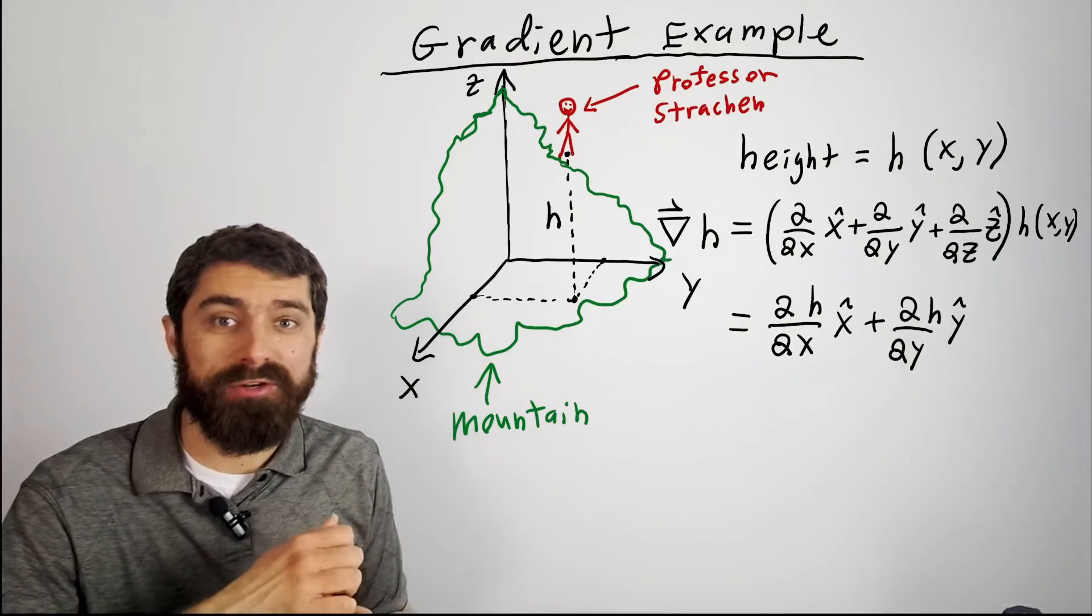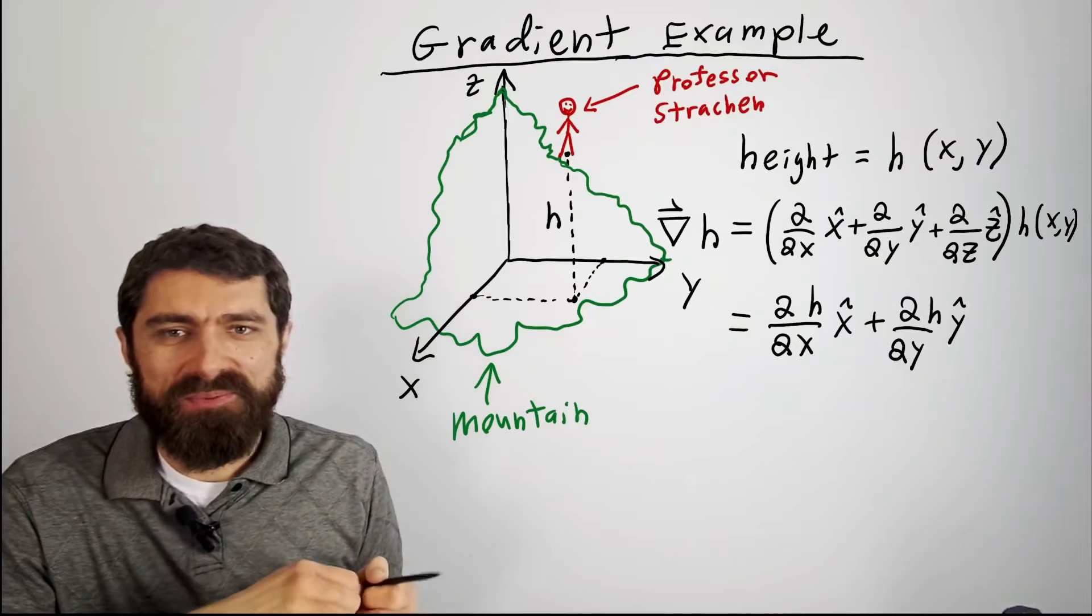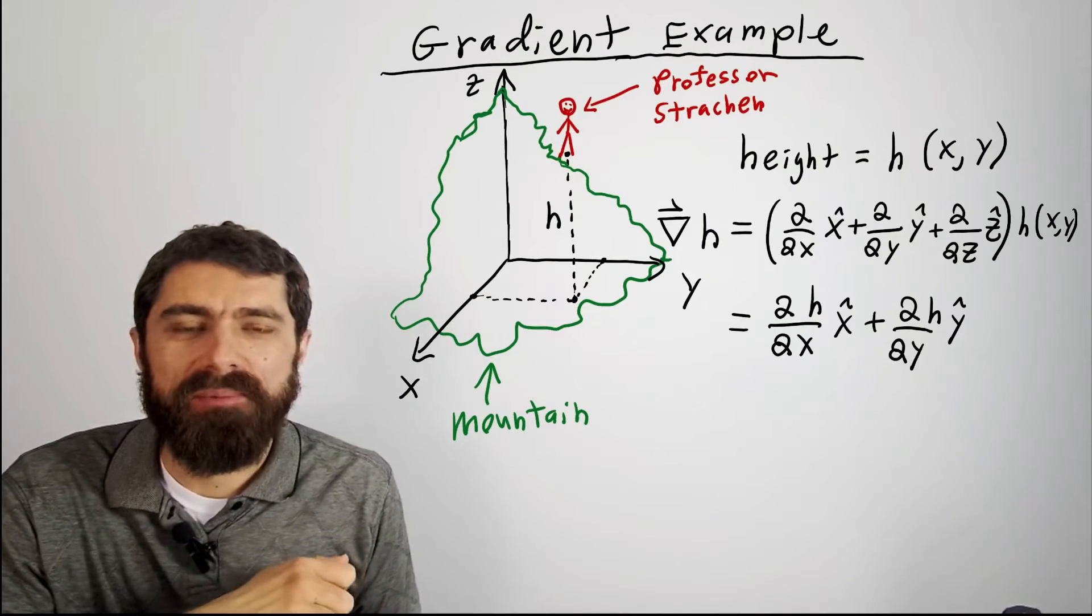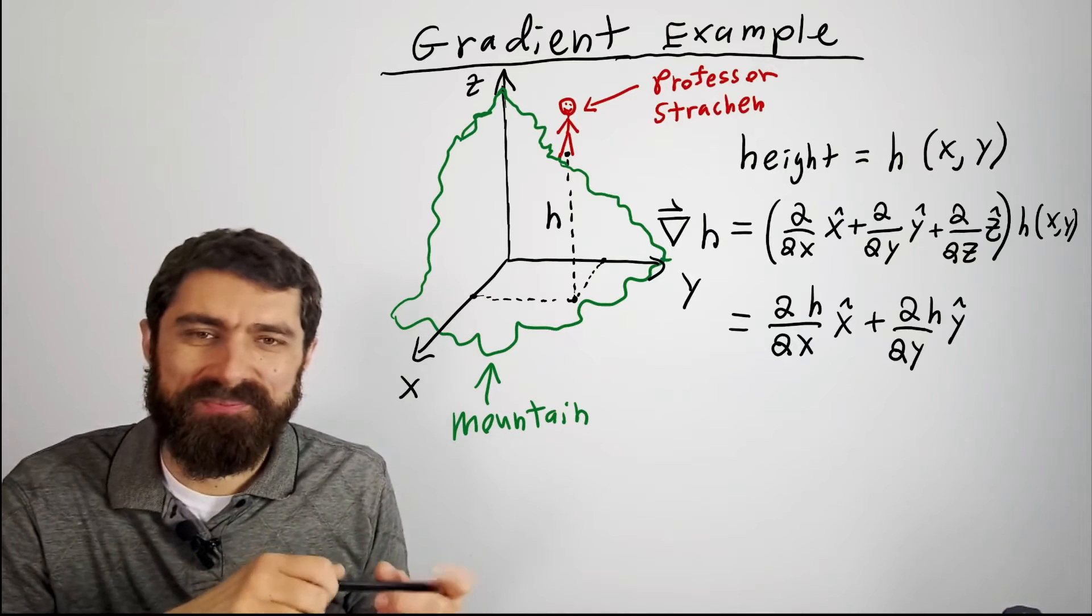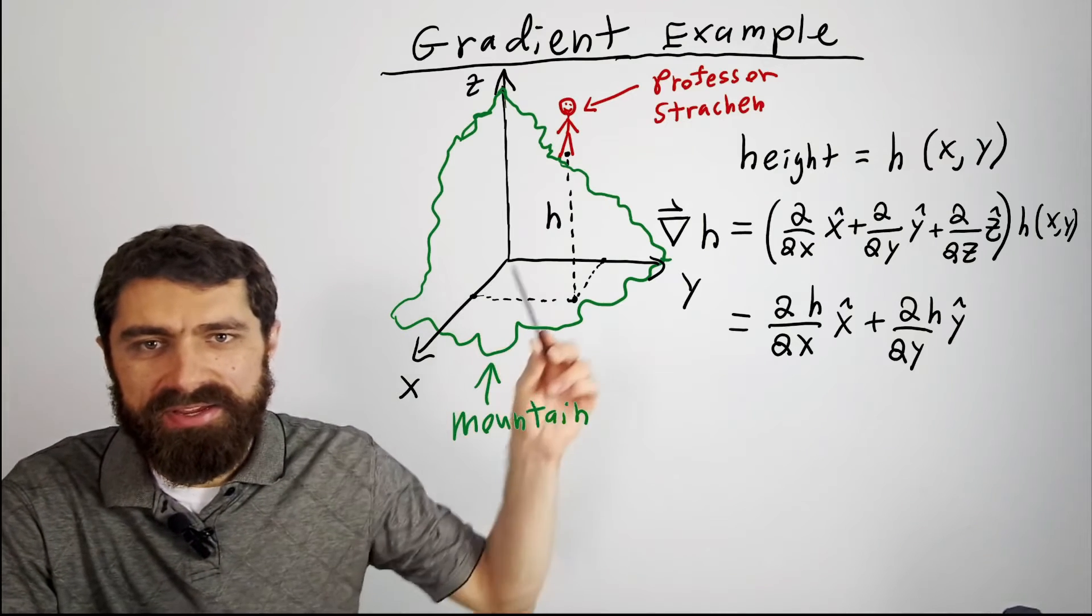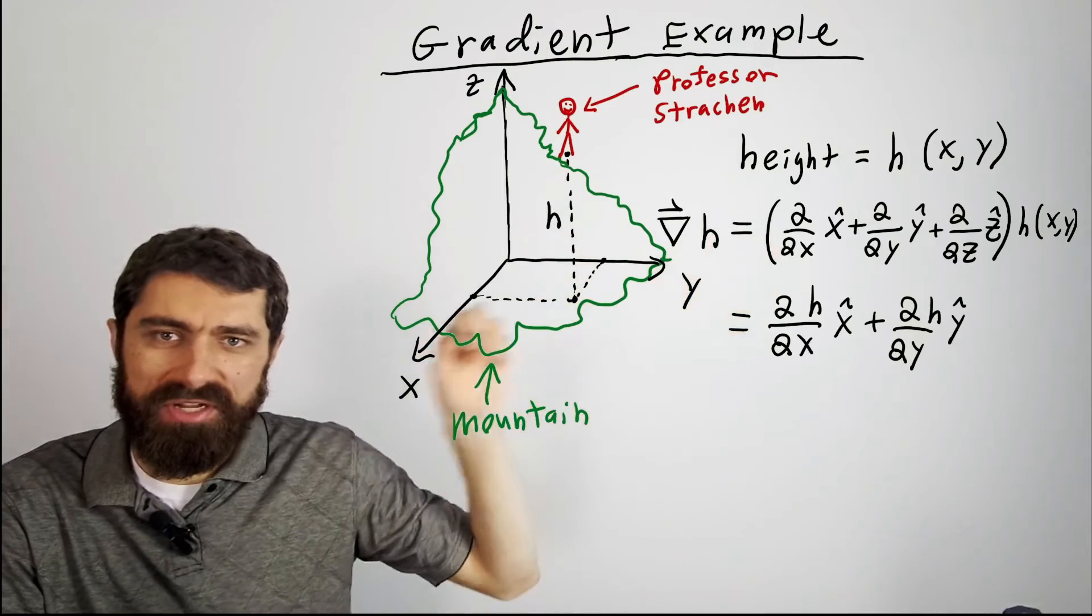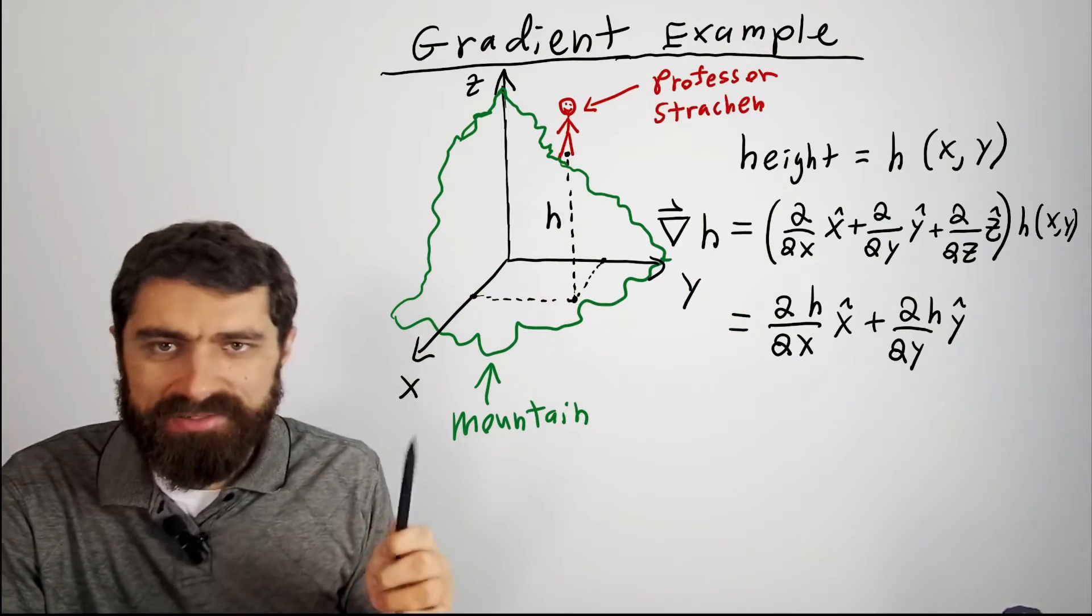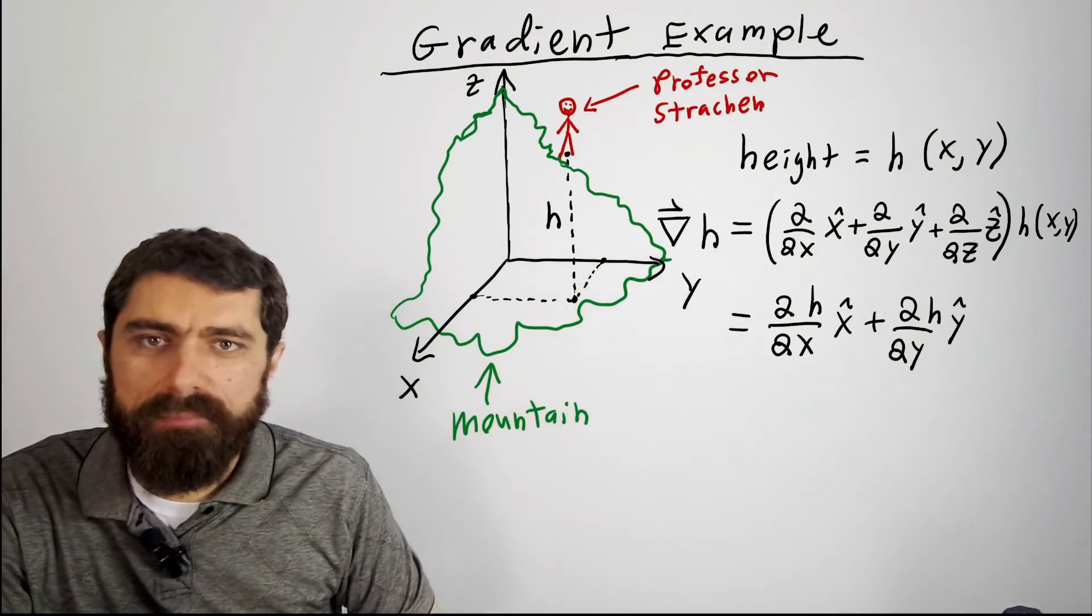All right, let's talk about the gradient of a scalar field. And to explain what that represents, basically, I'm going to give you kind of a funny example here. So let's suppose there's a mountain here. And I have basically a scalar function, the height h, as a function of x and y.